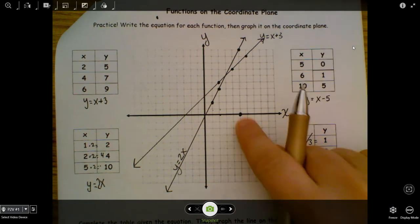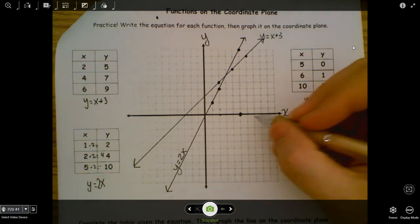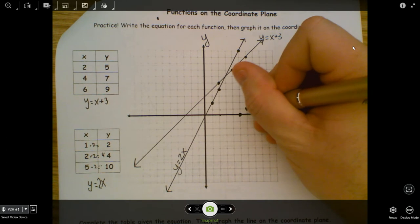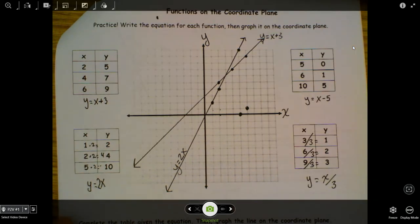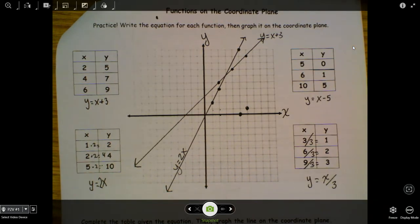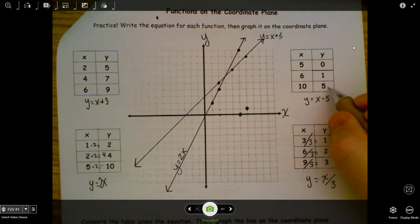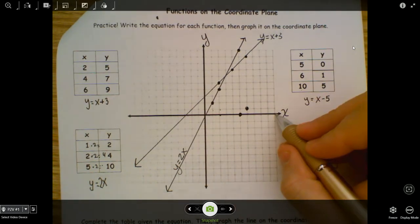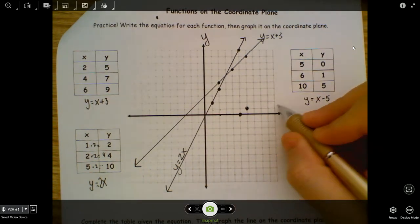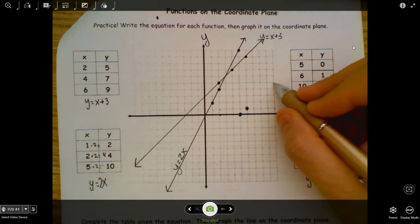Over 6, up 1. So I go 1 more than 5. Up 1. Right there. And then over 10, up 5. I know 10 is my last one. And then up 5. One, two, three, four, five.